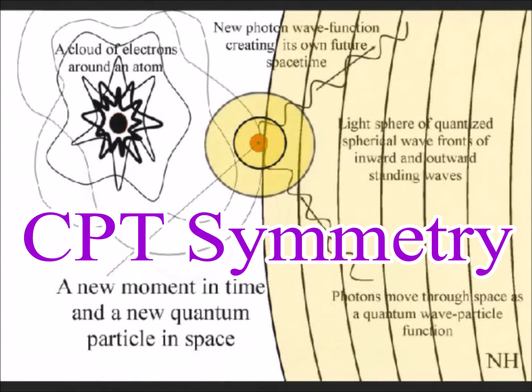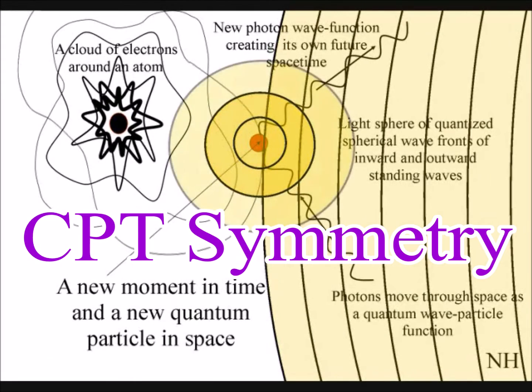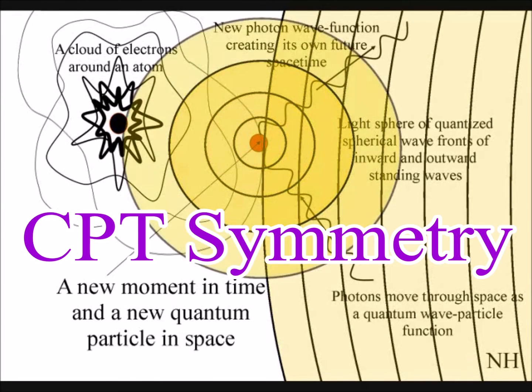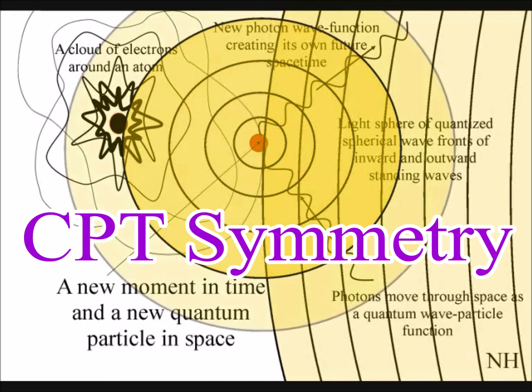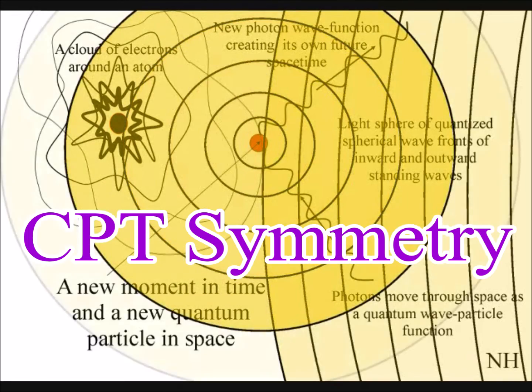At that moment in time, we have mirror symmetry between matter and antimatter in the form of charge, parity, and time.